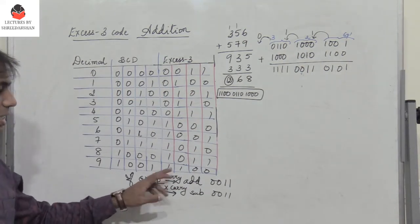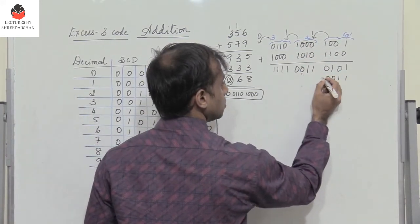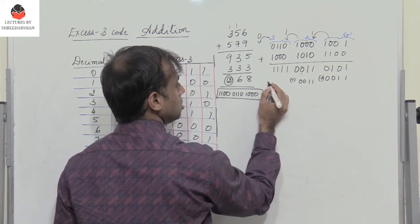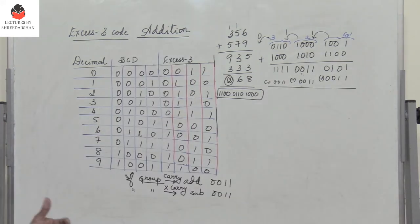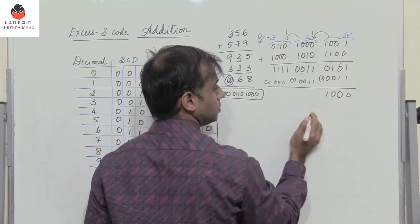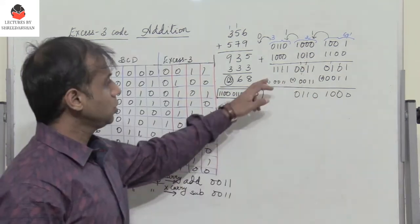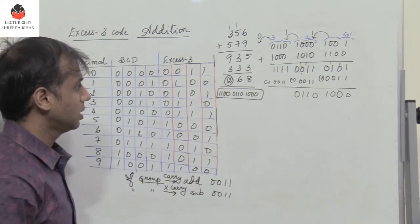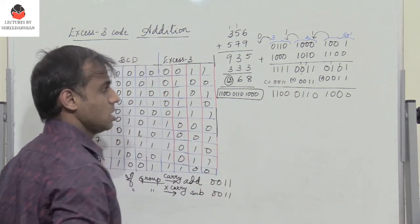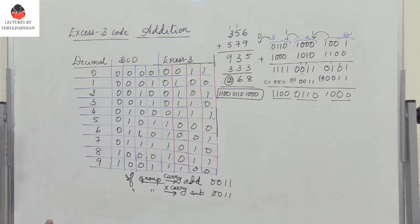If a group generates a carry to the next stage, add 3; if it does not generate a carry, subtract 3. Group 1 is generating a carry, so add 3. Group 2 is also generating a carry, so add 3. Adding 3 to group 1: 1 plus 1 is 0 carry, 0 carry, 0 carry, giving 1100. Adding 3 to group 2 gives 0110. Since group 3 generates no carry, subtract 3: 1 minus 1 is 0; 1 minus 1 is 0; 1 minus 0 is 1; 1 minus 0 is 1 — giving 1000. This corresponds to 12, 6, and 8 — the correct answer. This is how we perform XS3 addition.